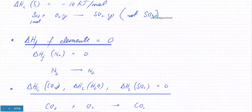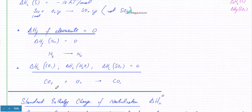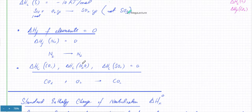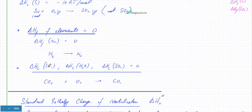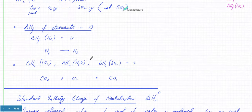The enthalpy of formation of elements is always zero, because you don't have to form elements — they already exist as themselves. Similarly, the enthalpy of combustion of substances that have already combusted — like CO2 or water — is zero, because you can't burn CO2 again. Enthalpies of combustion of the products of a combustion reaction are zero because they're not going to burn.